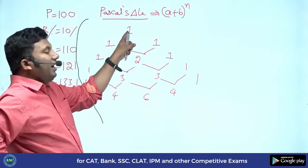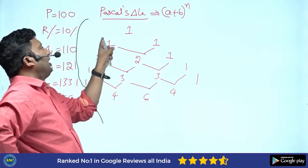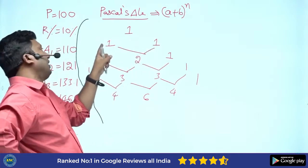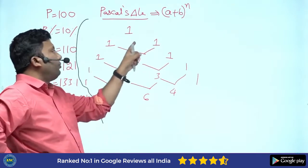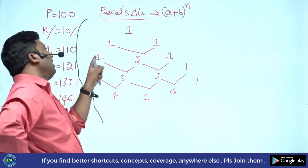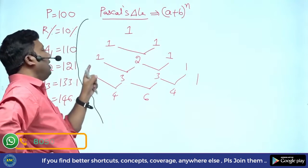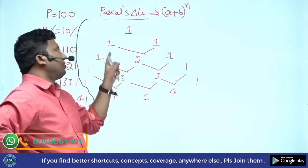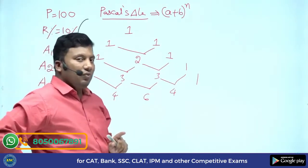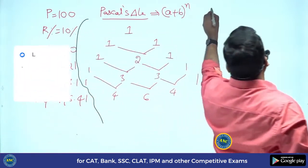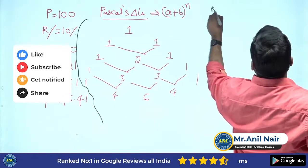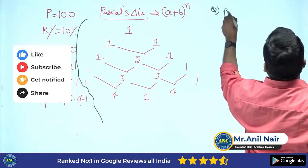Pascal's triangle: write 1 here, write 1 on the left-hand side and 1 on the right-hand side. Continue: write 1 on the leftmost and 1 on the rightmost, and in between, add them — 1 plus 1 equals 2. A student asks: where is it used?